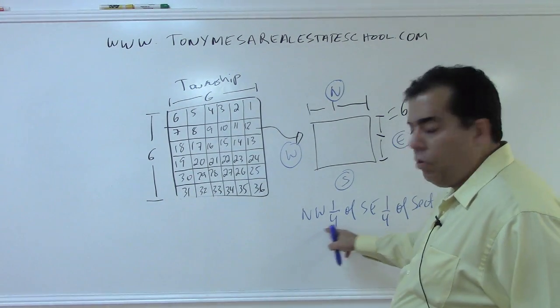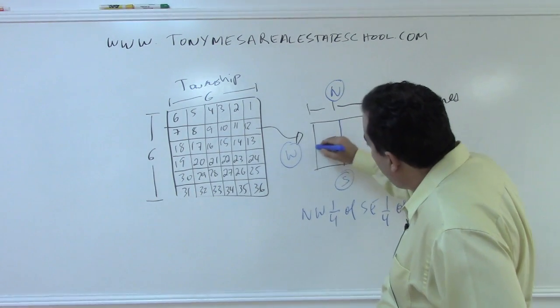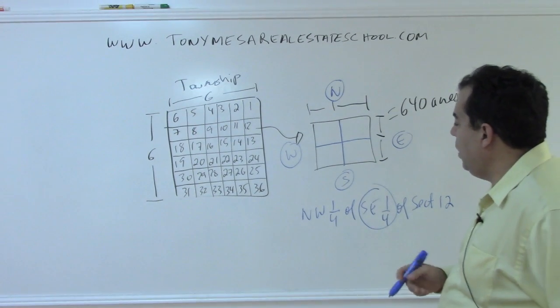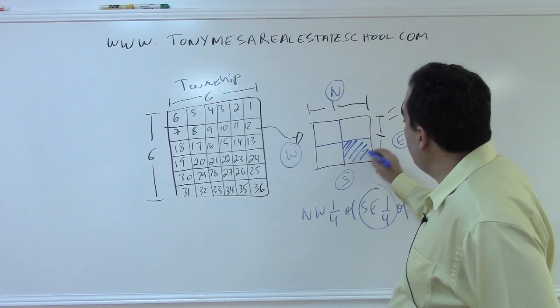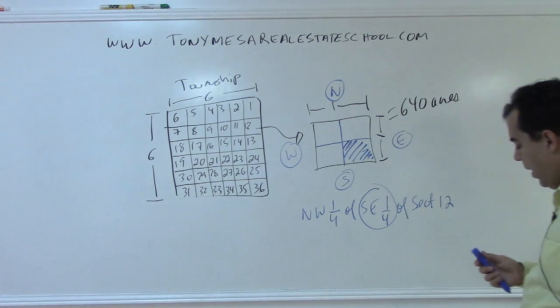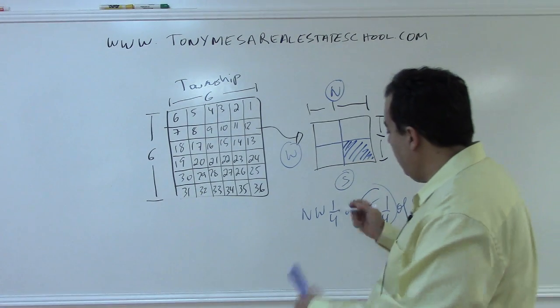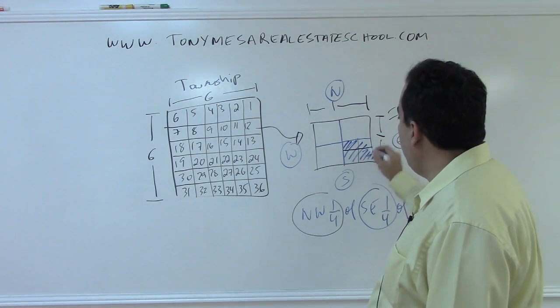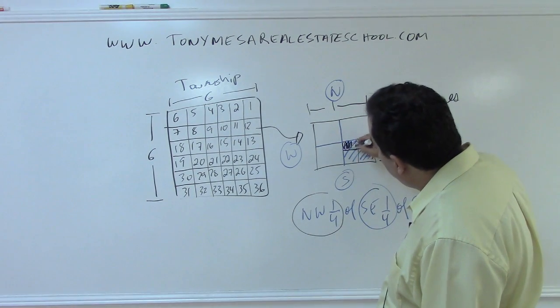So what happens is you're in the northwest quarter of the southeast quarter. So the first thing you would have to do is draw this section into quarters, and you're in the southeast quarter. The southeast quarter is this piece I'm marking off right here. And then you're in the northwest quarter of the southeast quarter. So the idea is I would draw this into quarters, and the idea is that the northwest quarter is this piece right here.